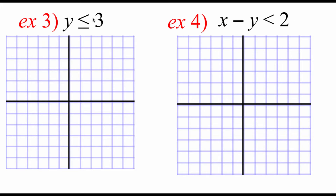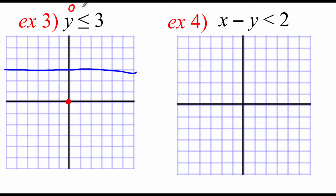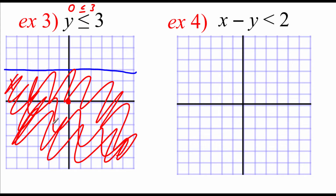In example three, it says y is less than or equal to three. This is going to be a flat horizontal line going through our y value of three. It's going to be a solid line since we do have the equals to. Zero, zero is available to us as a test point since our line is not going through that point. Zero is less than or equal to three — that is a true statement — so we want to shade on the same side of the line.